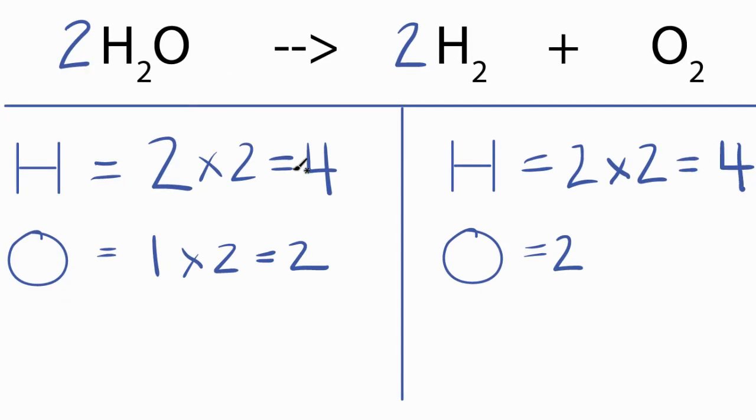So we have two times two, four hydrogens here, two times two, four hydrogens here. We have two times the one, that gives us our two oxygens, and we have our two here, two oxygens total.